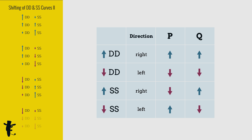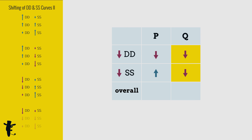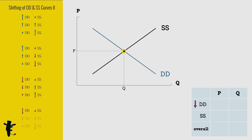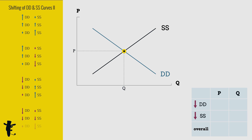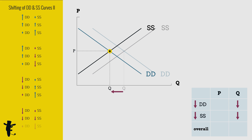What happens when demand and supply decrease? Overall, quantity decreases. Price decreases here and increases here, so we don't really know what's the overall change. When the decrease in demand is huge and the decrease in supply is small, quantity decreases.